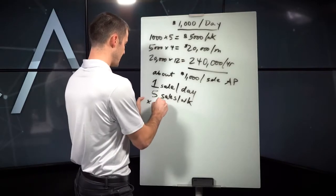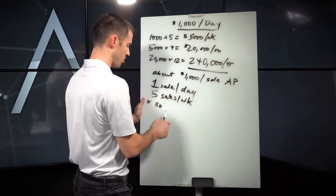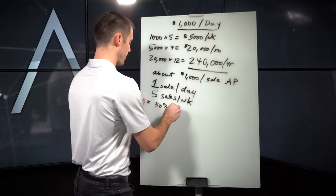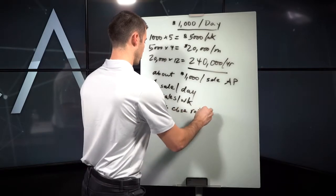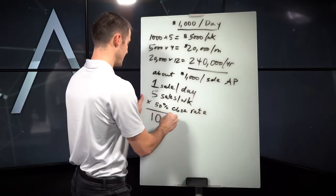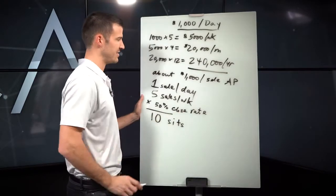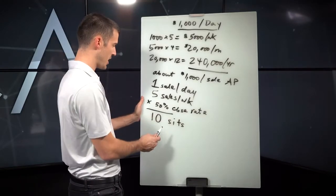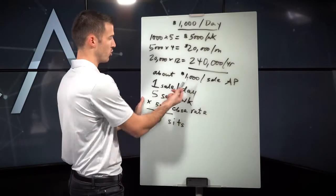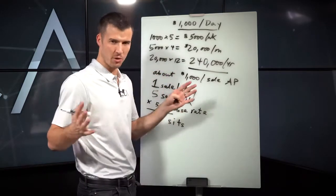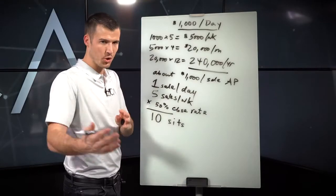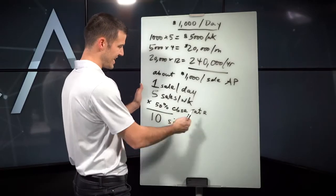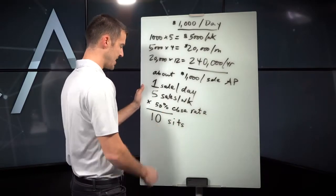Let's just say that your closing rate is 50%. So that means that you need 10 sits. There's a lot of agents that if they have 10 sets, they're not going to earn 240K in premium because they're not going to have a 50% close or maybe their average sale is not a thousand bucks. This is just general math.